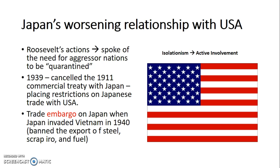The fourth factor is Japan's worsening relationship with USA. Roosevelt's actions spoke of the need for aggressive nations to be quarantined. Although the USA was not completely involved in the war in the early stages, they were growing worried about Germany and Japan becoming stronger. In 1939 they cancelled the 1911 commercial treaty with Japan, placing restrictions on Japanese trade with USA. They didn't want to sponsor Japan's expansionist policy efforts, so they slowly cut economic ties. They also placed a trade embargo on Japan when Japan invaded Vietnam in 1940, banning the export of steel, scrap iron, and fuel — severely affecting Japan's economy, which was dependent on trade with the USA.